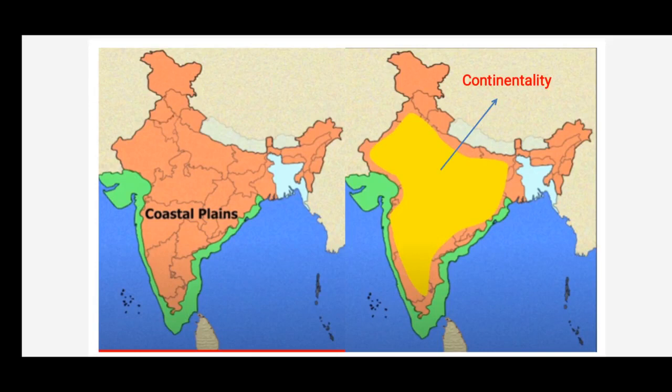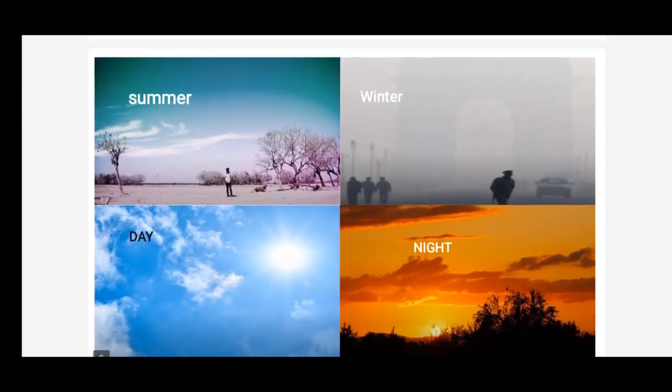People in the coastal areas experience milder summers and milder winters — not too hot or not too cold. As the distance from the sea increases, its moderating influence also decreases, and people experience extreme weather conditions. This is known as continentality — it would be very hot during summer and very cold during winters, and very hot during day and very cold during night.